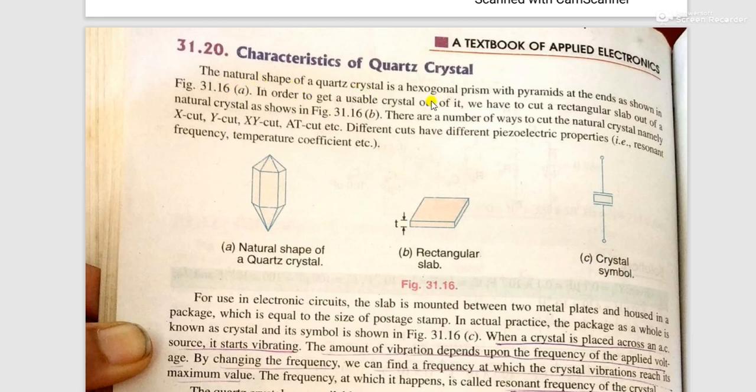The natural shape of a quartz crystal is a hexagonal prism with pyramids at the ends as shown. In order to get a useful crystal out of it, we have to cut a rectangular slab from the natural crystal. There are a number of ways to cut the natural crystal, namely X cut, Y cut, XY cut, etc.